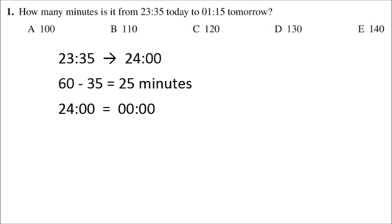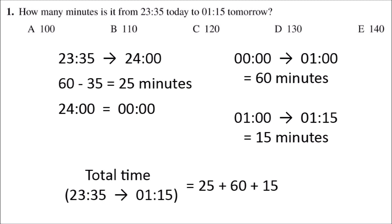So we want to get to 01:15, which is one hour and 15 minutes past zero. An hour is 60 minutes, so if we move 60 and then another 15, then we'll get to 01:15. The total minutes from 23:35 to 01:15 would be that 25 add 60 add 15, which is 100.